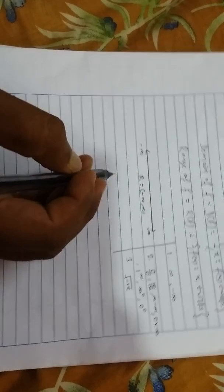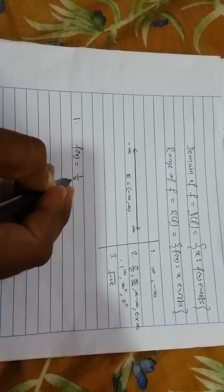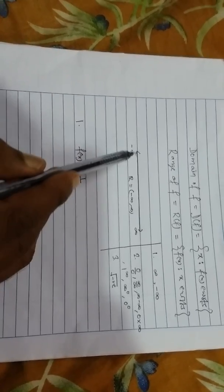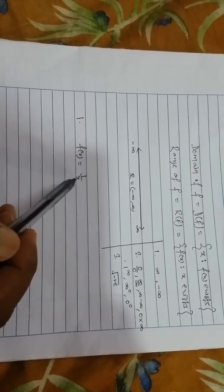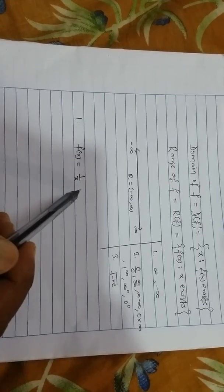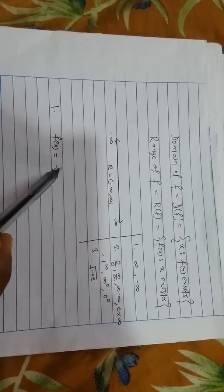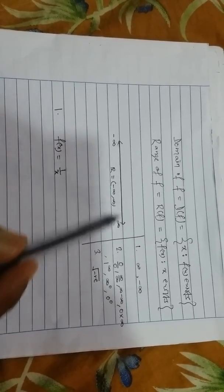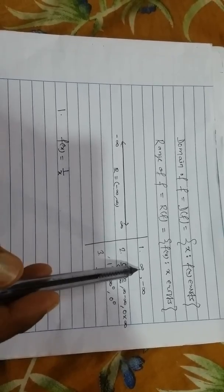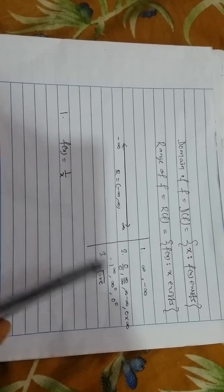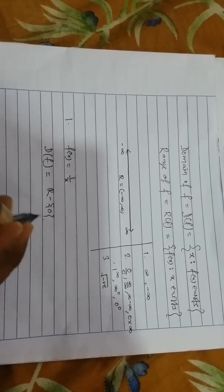For example, take f(x) = 1/x. What is the domain of this function? On the real number line from minus infinity to plus infinity, if we substitute x = 0, then f(x) becomes 1/0 = infinity, which violates the first condition. So we cannot keep x = 0 in the domain. If you substitute any number other than zero, the value of f(x) will not be infinite, indeterminate, or imaginary.